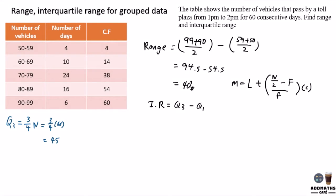And for Q1, it will be 1 over 4 times n, which means 1 over 4 times 60, which will give you 15. So let's look at the cumulative frequency.